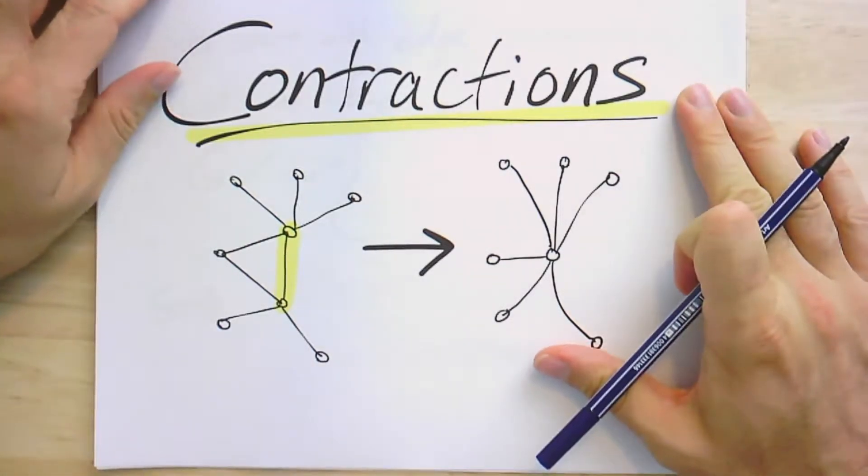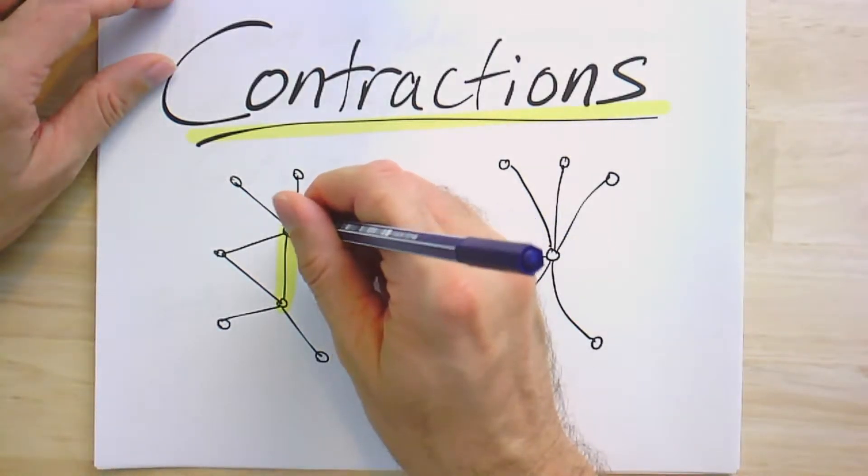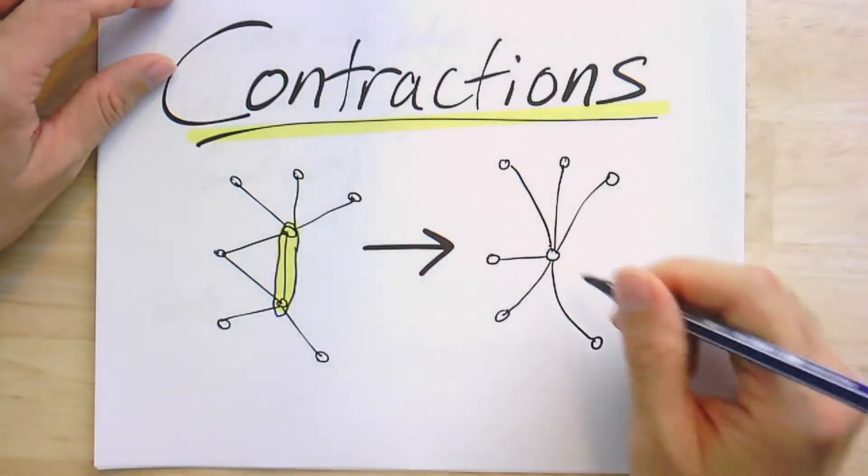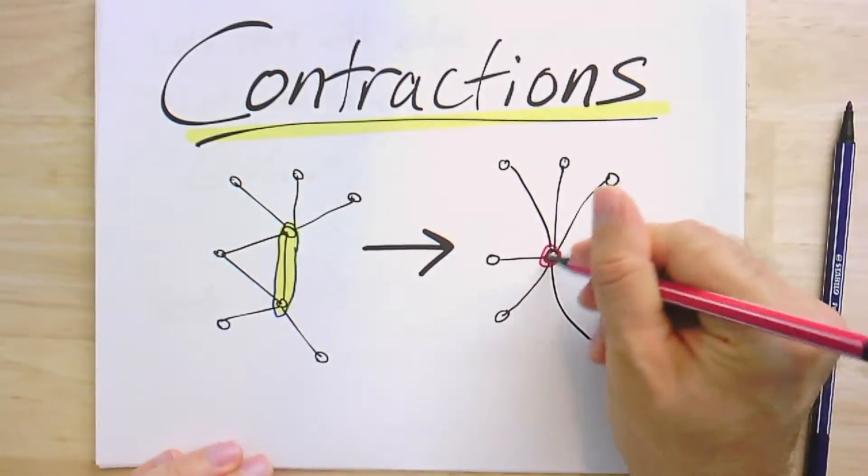So here is an example of a contraction, a very simple graph here. And what I'm doing is I'm just going to contract one edge. That is, right here, this edge is going to get contracted down to be just this one vertex here.